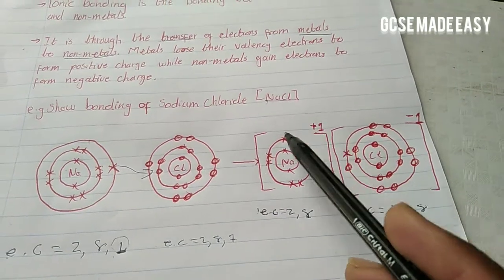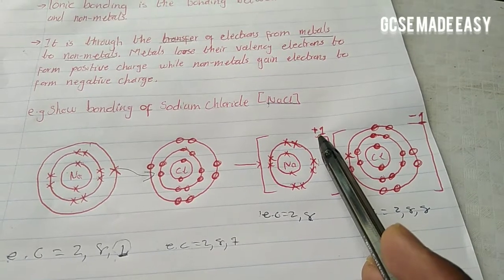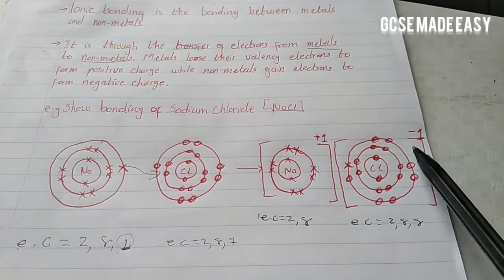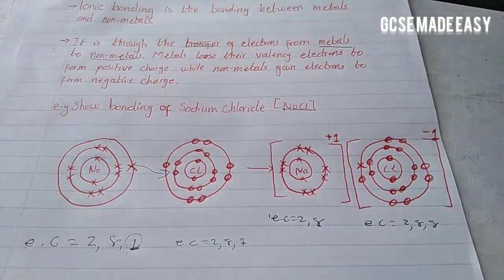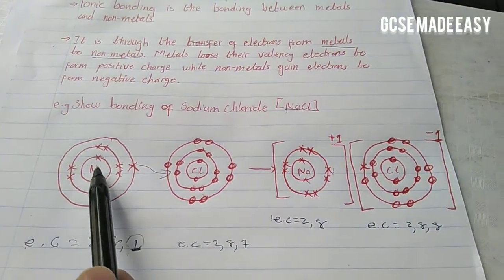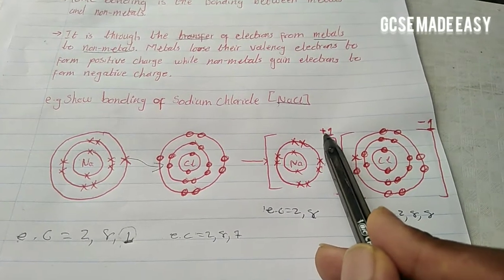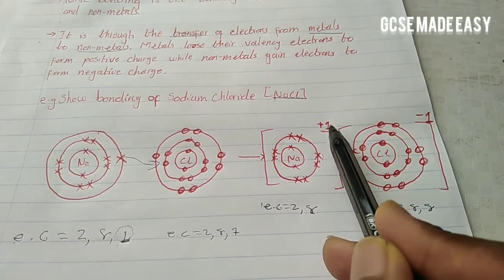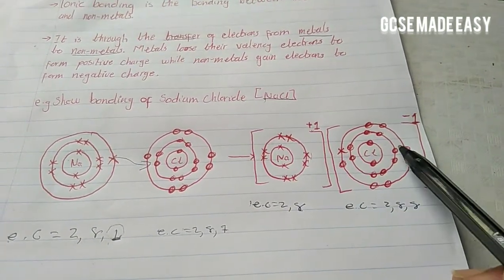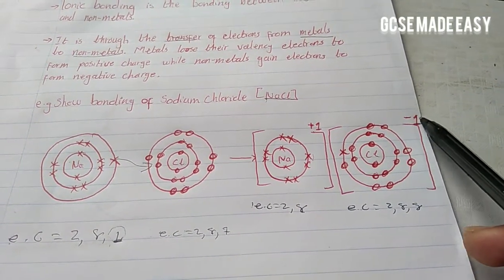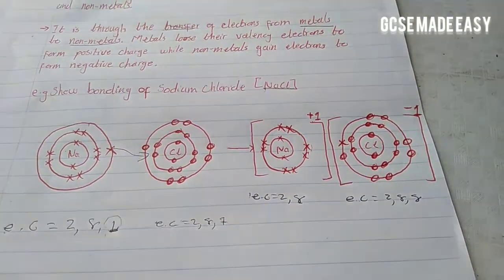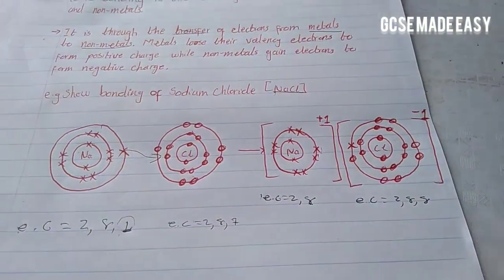Because metals lose valency electrons to form a positive charge, sodium forms a +1 charge after losing its valency electron. Nonmetals gain electrons to form a negative charge, which is why chlorine has a -1 charge. The value of the positive charge depends on how many electrons the metal has lost, and the value of the negative charge depends on how many electrons the nonmetal has gained to obtain octet configuration.